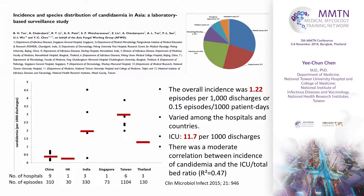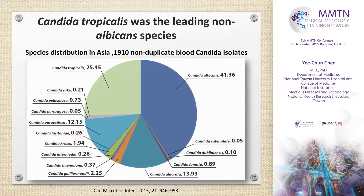Based on our first AFWG project, 25 centres in Asia provided data and we can see the variation in incidence. Most importantly, Candida albicans remains number one, but Candida tropicalis is the leading non-albicans species. There are also some rare Candida species.